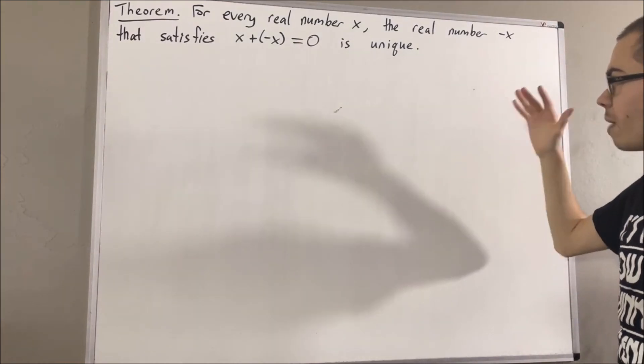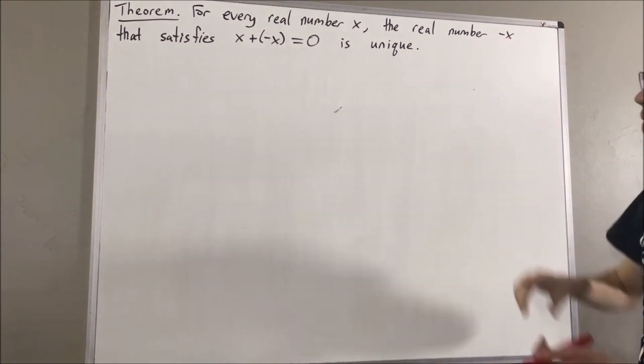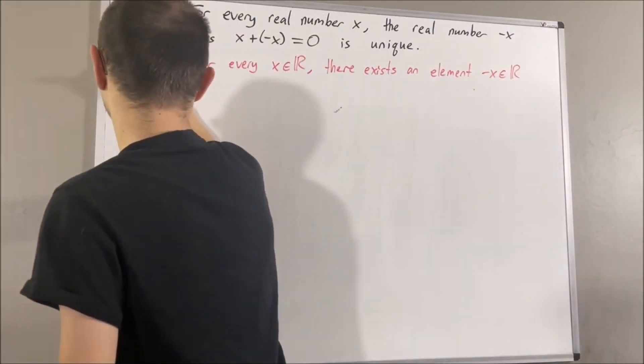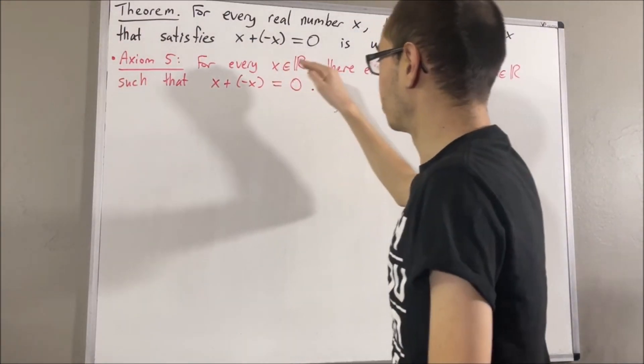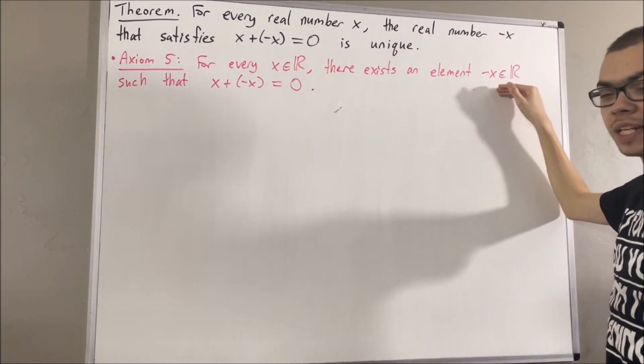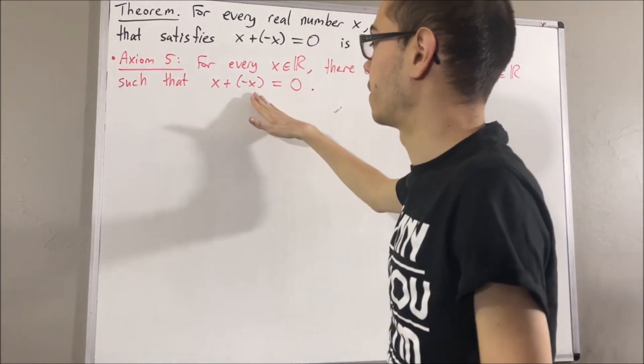Now, let's remind ourselves of the axiom that discusses this real number negative x. For every real number x, there exists a real number that we call the negative x that satisfies the property that x plus the negative x is equal to zero.